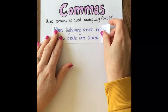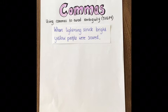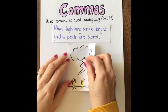I've got an activity for you. I've got a sentence here and I want you to have a go at drawing what that sentence says: 'When lightning struck bright yellow people were scared.' Pause the video, do the drawing, and we'll come back and see if you got the same as me.